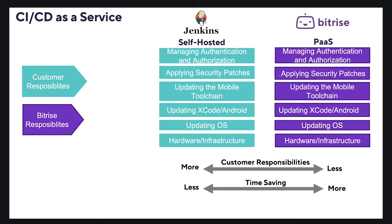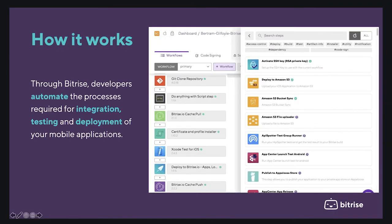Customers can also predict the total cost of ownership with greater accuracy. For example, if you are setting up a CI/CD tool for mobile development, you will have to handle everything from processing hardware, updating the operating system, updating Xcode or the Android stack, updating the mobile tool chain, applying security patches, and managing authentication and authorization.